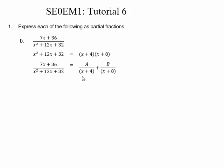To get this over a common denominator, we multiply this term by x plus 8 over x plus 8, and we multiply this term by x plus 4 over x plus 4.